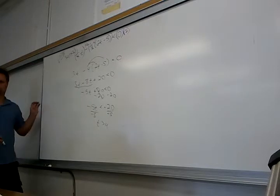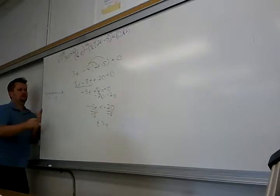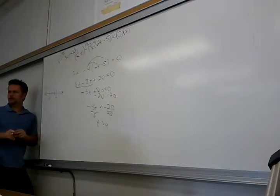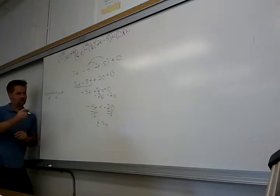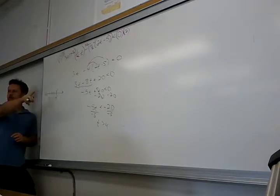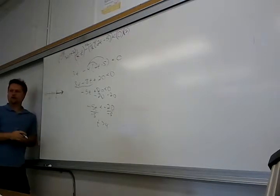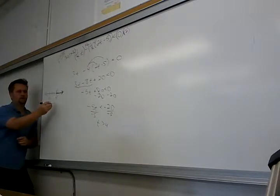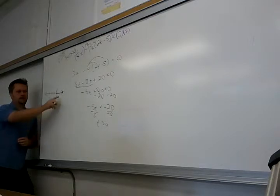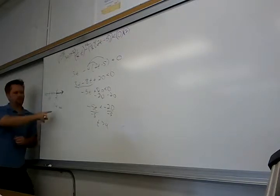Do a number line. Since the answer is T greater than 4, use an open parenthesis - not a bracket - because it's strictly greater than. The line shades to the right because the inequality points in the direction you want to shade. All those numbers are bigger than 4. For interval notation: it's (4, infinity) - there's no endpoint, it goes forever. Start at 4 and go forever.